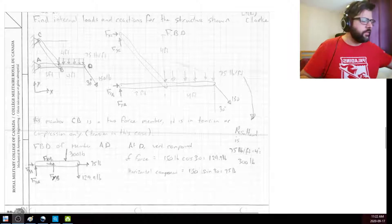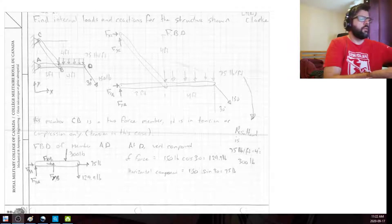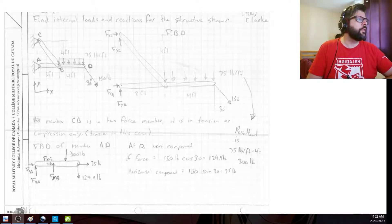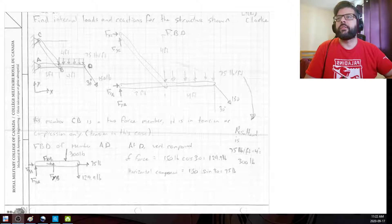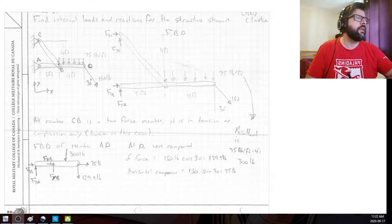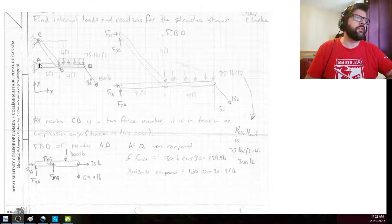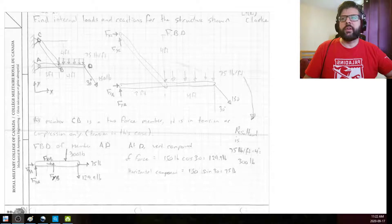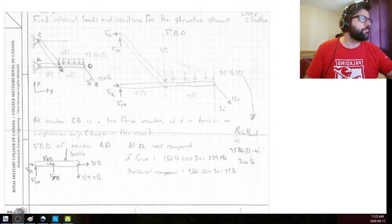So first things first, restating what I'm doing for the problem, trying to find the internal loads and the reactions for the structures shown. And then what we're going to be doing here is we are going to be starting off with an idealized structure. So we've got the structure here, basically in this instance just redrawing because the drawing that we looked at was already kind of in the form of the idealized structure. We've got that, we've got our diagrams.